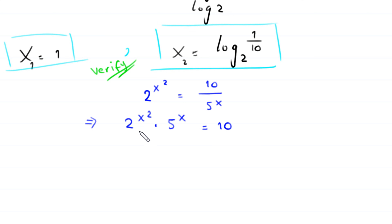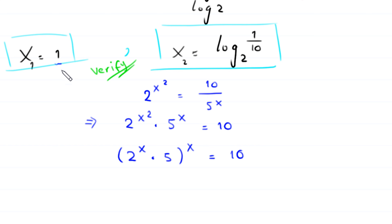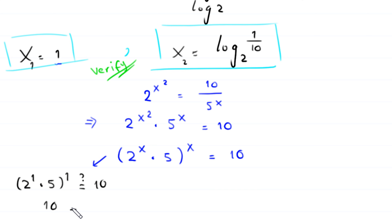This left hand side can be written as 2 to the power x times 5, whole to the power x, equals 10. Replacing x with 1: 2 times 5 to the power 1 equals 10. So 10 to the power 1 is 10, which equals 10. Left hand side equals right hand side, confirming that x equals 1 is a valid solution.